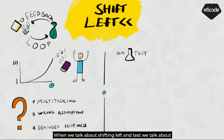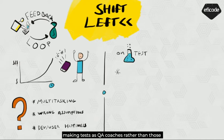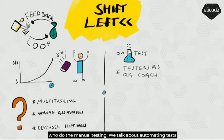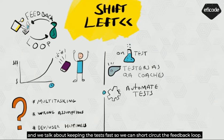When we talk about shifting left on test, we talk about making testers QA coaches rather than those who do the manual testing. We talk about automating tests and keeping the tests fast so we can short circuit the feedback loop.